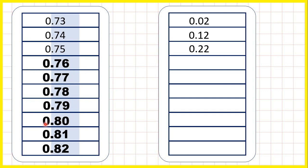because we don't normally write zeros on the end of decimal numbers. So 0.80 is just written 0.8.